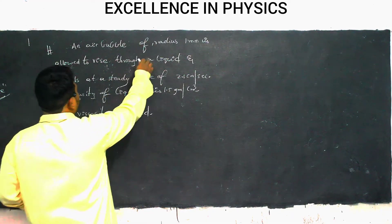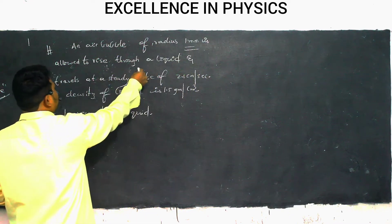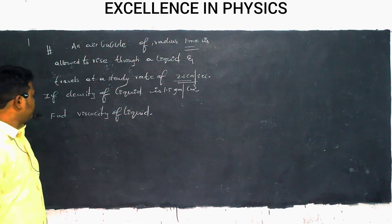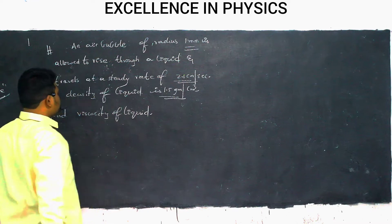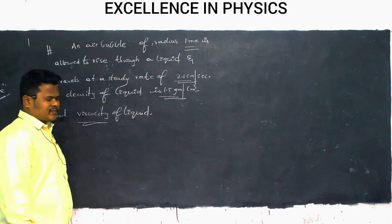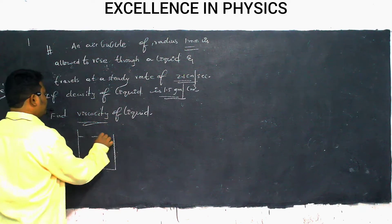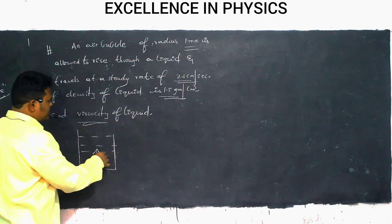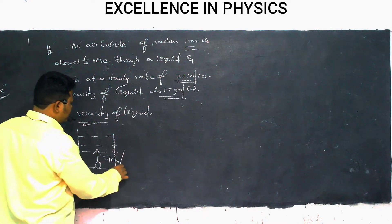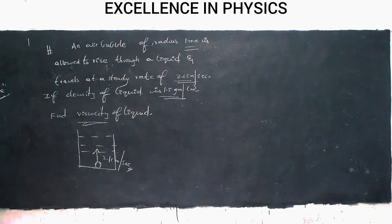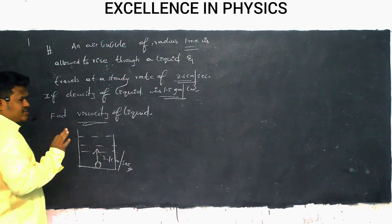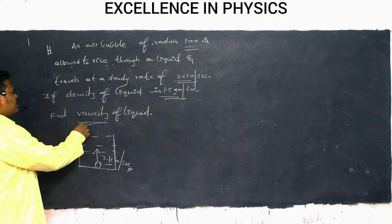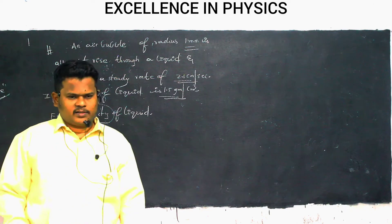Problem: An air bubble of radius 1 mm rises through a liquid and travels at a steady rate of 2.1 cm/s. The density of the liquid is 1.5 g/cm³. Find the viscosity of the liquid. The bubble is traveling upward with constant velocity — so upward and downward forces are balanced.